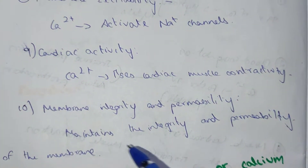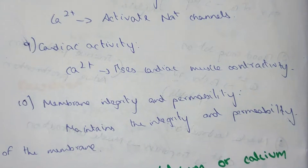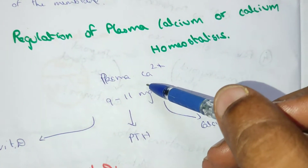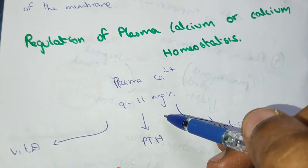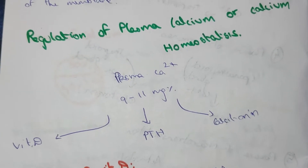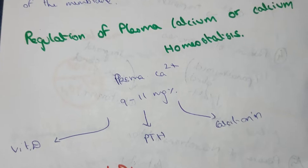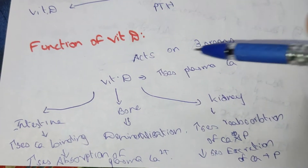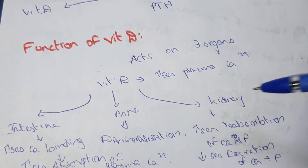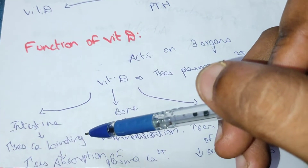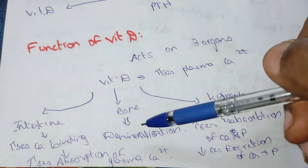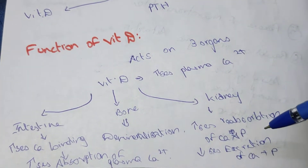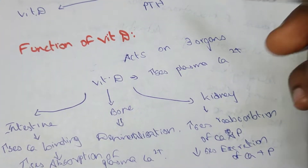Calcium also activates Na⁺ channels, decreases cardiac muscle contractility, and maintains membrane integrity and permeability. Plasma calcium homeostasis: the normal plasma calcium level is 9 to 11 mg percent, regulated by vitamin D, PTH, and calcitonin. Vitamin D acts on three organs — intestine, bone, and kidney. In the intestine, it increases calcium binding and absorption; in bone, it causes demineralization; in the kidney, it decreases excretion of calcium.